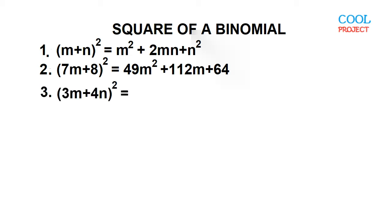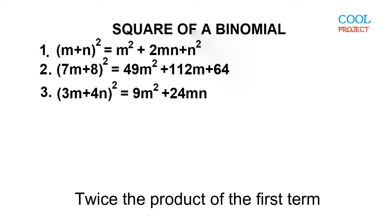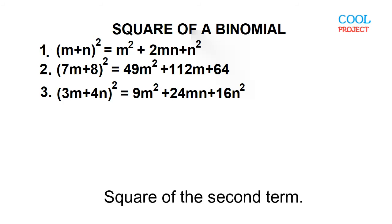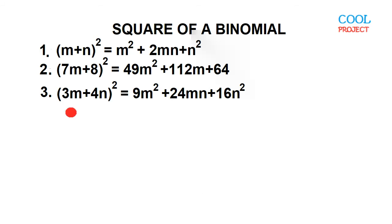Example number three: the square of the quantity 3M plus 4N. This is equal to 9M squared plus 24MN plus 16N squared. 3M times 4N is 12MN times 2 is 24MN, and 4N times 4N is 16N squared.